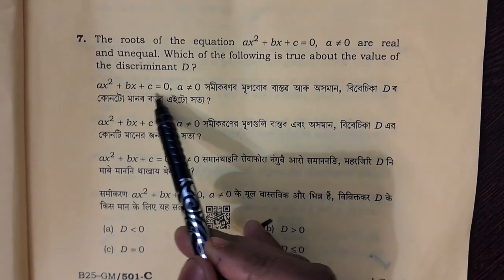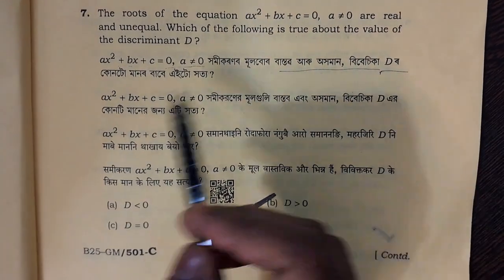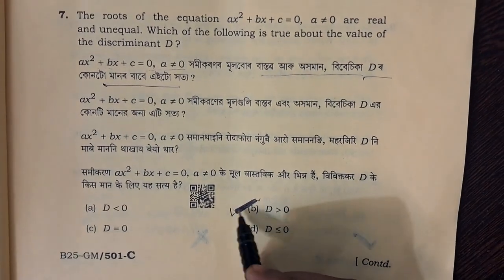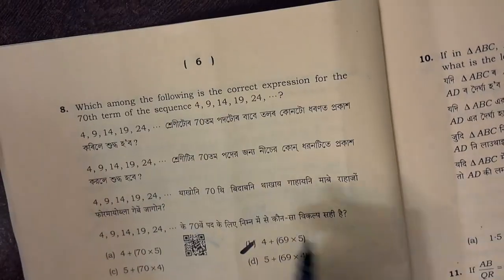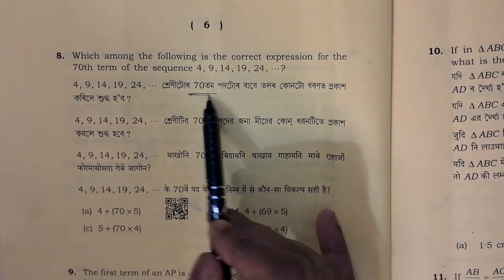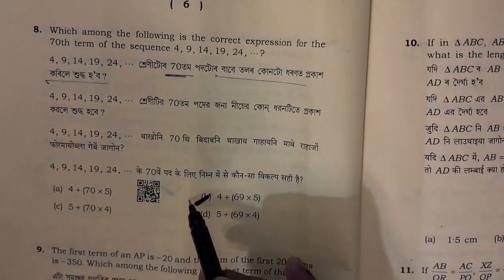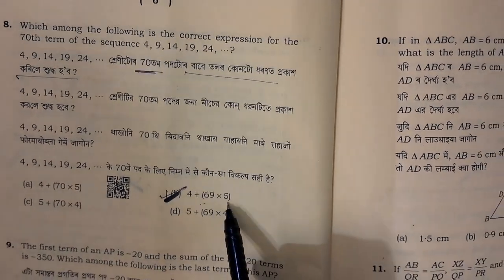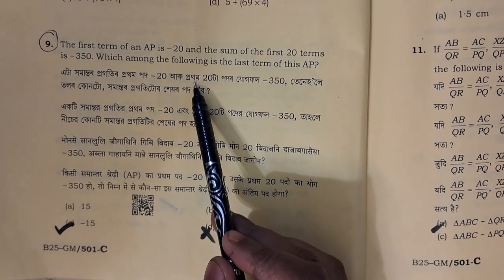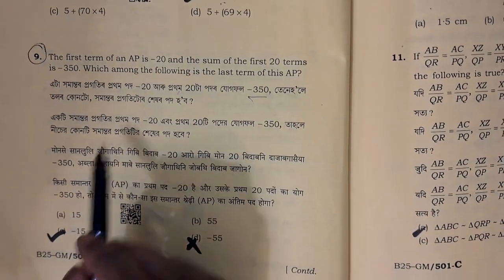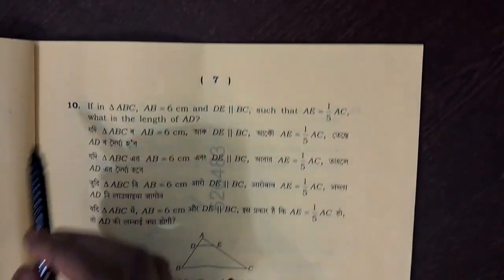Question number 6: the right answer, d is greater than 0. So the right answer is option number B, that is 4 plus 69 into 5. Next, the right answer will be option number C, that is minus 15.